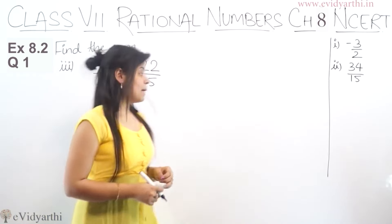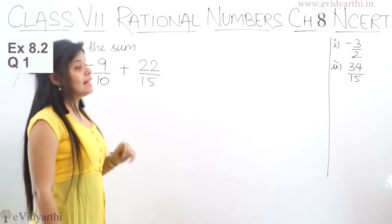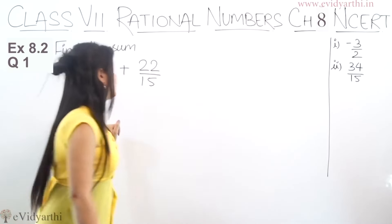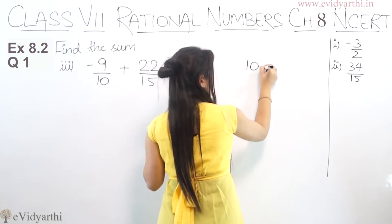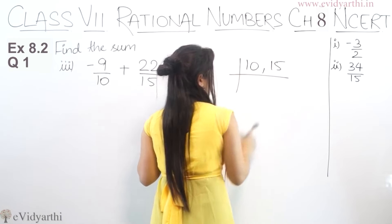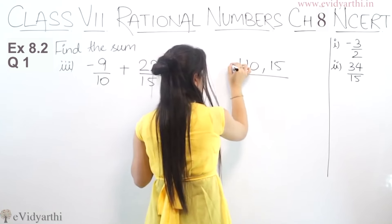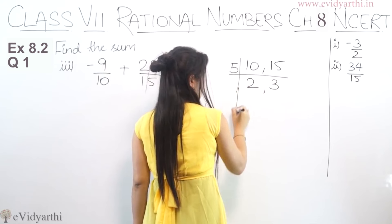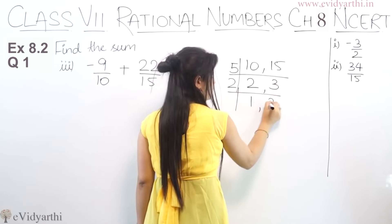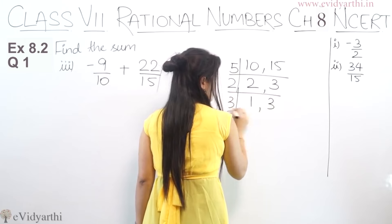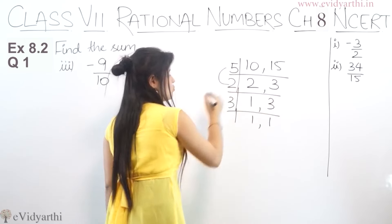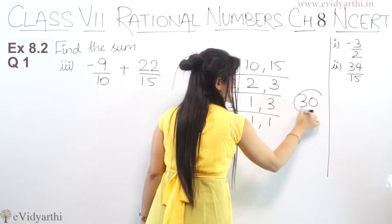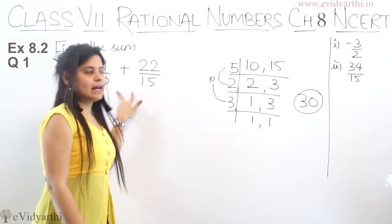Now coming to the third part. The third part has minus 9 upon 10 plus 22 upon 15. Again the denominators are different, so we take the LCM of 10 and 15. Both can be divided by 5: 5 twos are 10 and 5 threes are 15. Then dividing by 2 gives 1 and 3, and dividing by 3 gives 1 and 1. So 5 times 2 times 3 is 30 — the LCM is 30.